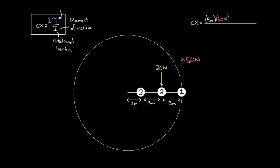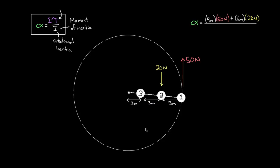The torque from the 20 Newtons: you must also multiply by R. It's always the distance from the axis, so it's from the center to where the 20 Newtons is applied — that's 6 meters. So it's 20 Newtons times 6 meters. But be careful: the 50 Newtons was trying to rotate the system counterclockwise and the 20 Newtons was trying to rotate it clockwise — they're opposing each other. Counterclockwise is usually positive and clockwise is usually negative, so the 20 Newton torque must be negative.